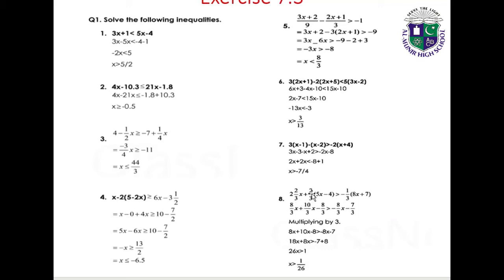Question 8: (2/3)x plus (2/3)(5x minus 4) greater than minus(1/3)(8x plus 7). Expanding: (8/3)x plus (10/3)x minus 8/3 greater than minus 8/3. Multiplying by 3: 8x plus 10x minus 8 greater than minus 8x minus 7, giving 18x plus 8x greater than minus 7 plus 8, so 26x greater than 1, therefore x greater than 1/26. Solution: x > 1/26.